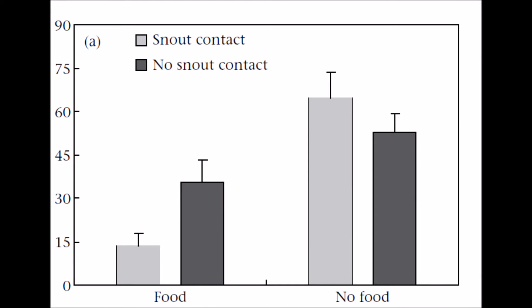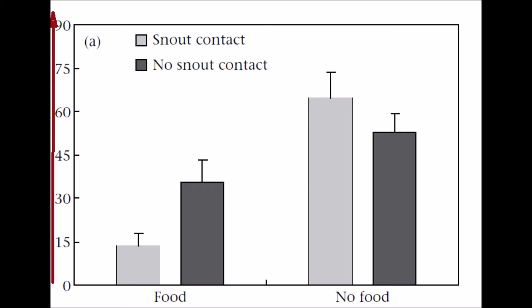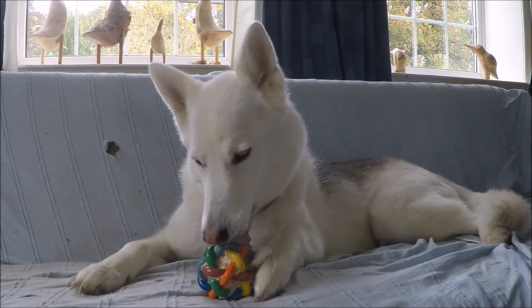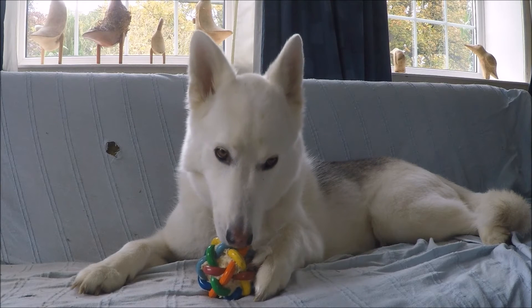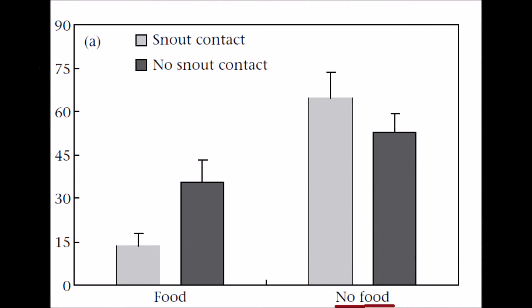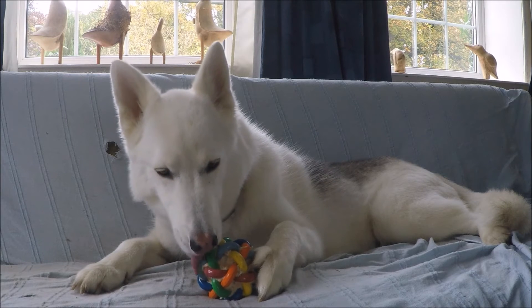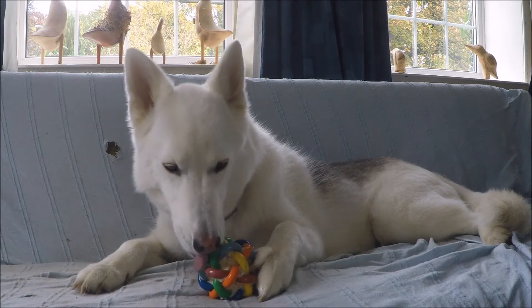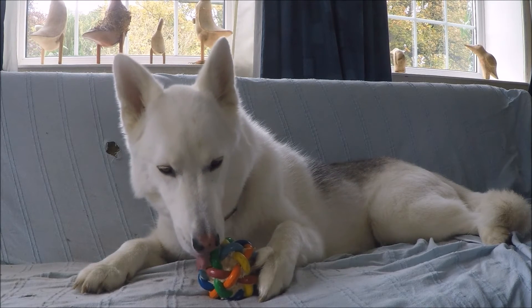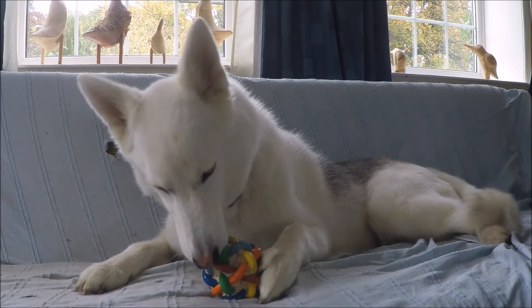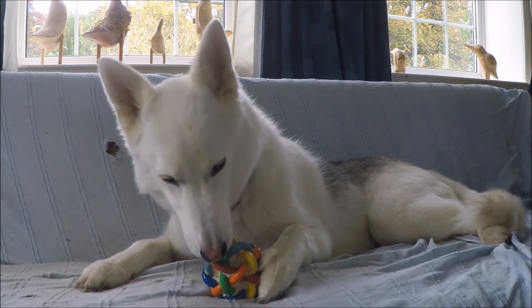Whether the dogs had snout contact had a knock-on effect on their behaviour. In the food found trials, dogs which had snout contact were quicker to visit the location of the food than those who didn't. This suggests the dogs which had snout contact realised their companion had found food, so it was worth checking the place they had been. Alternatively, in the food removed trials, snout contact increased the time it took the dog to look in that place, suggesting the dog used snout contact to tell them no food was found there, so it made sense to look elsewhere first.